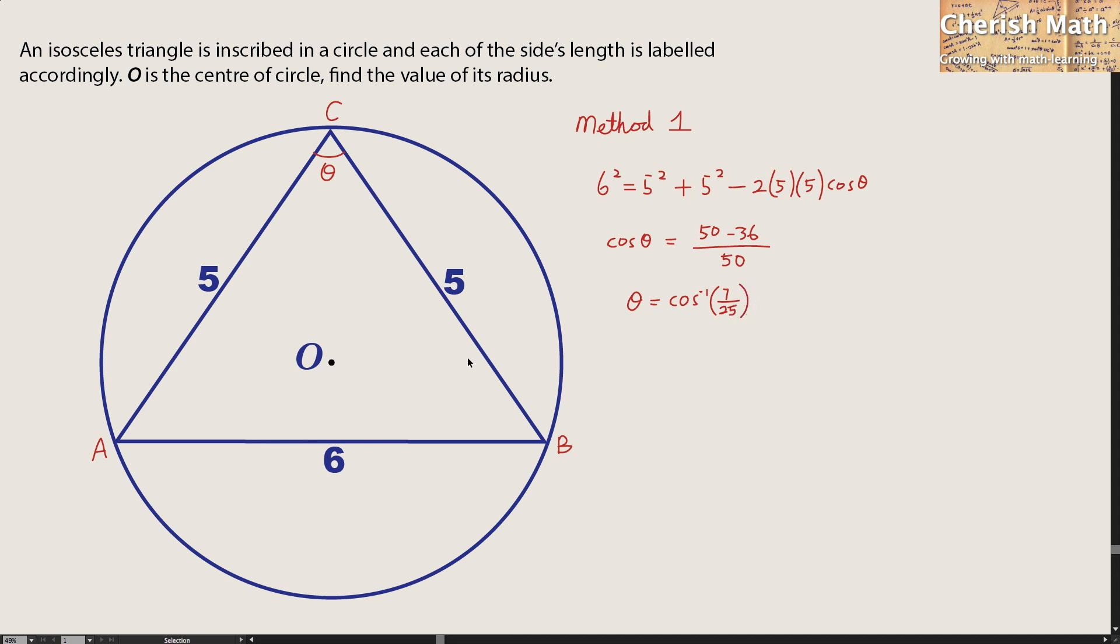In the next step, I'm going to make two lines connecting from O to A and O to B. And these are the radius of the circle. Now, I want to find what is the value of angle AOB, which is this part that I'm pointing at.